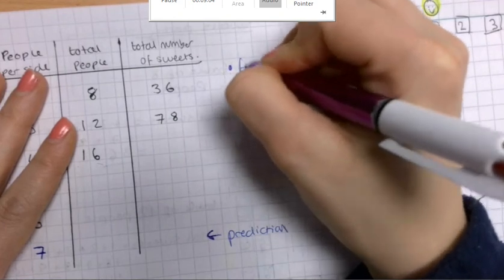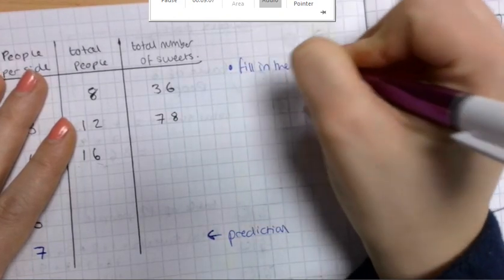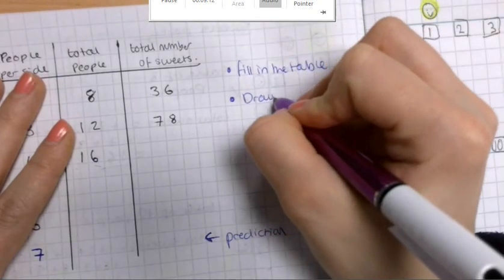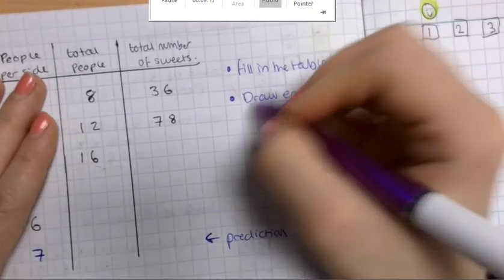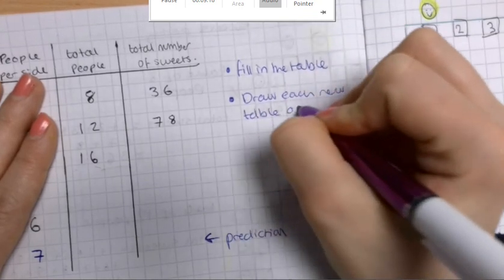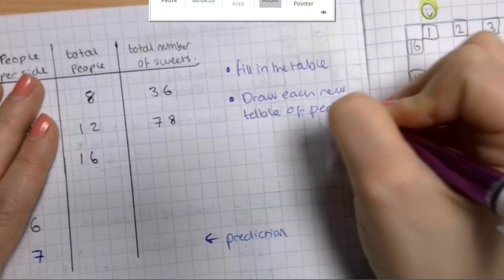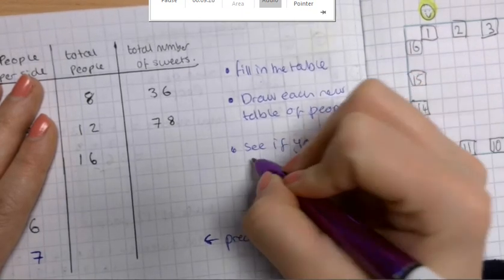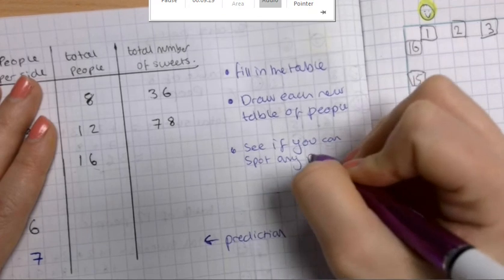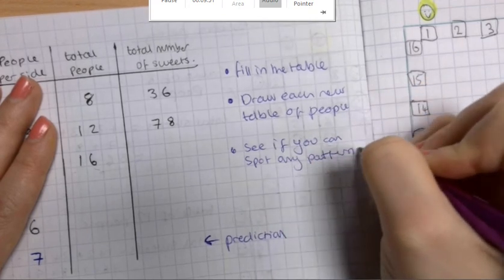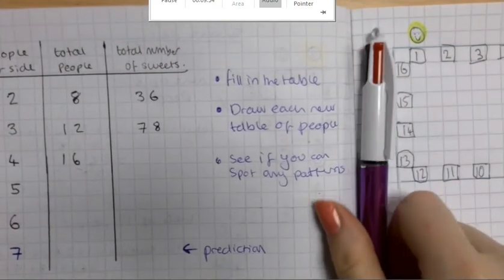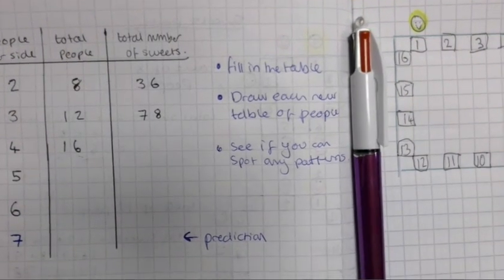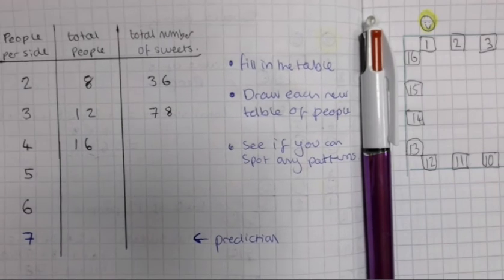So you're going to fill in the table, draw each new table of people, see if you can spot any patterns. Okay. I look forward to seeing what you've got, and I will see you in the next lesson, and we can talk about all the things that we've found. All right. Bye. See you later.